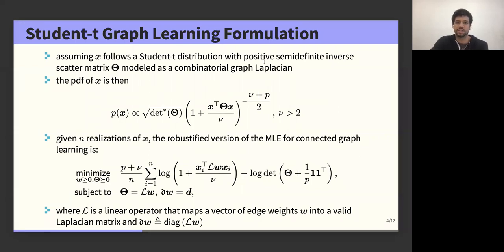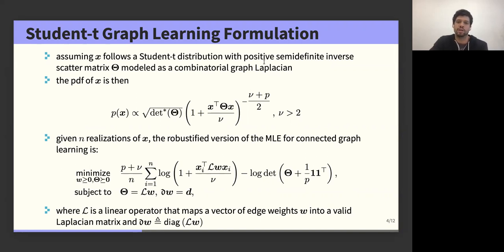Given n realizations of this random vector, we write down the robustified maximum likelihood estimator for the precision matrix as a non-convex optimization problem, where the operator L is a linear operator that maps a vector of edge weights to a valid Laplacian matrix, and D is also a linear operator that maps the same vector of graph weights into a vector of node degrees. This degree equality constraint is quite important in practice, as we will see in the numerical experimentation section.